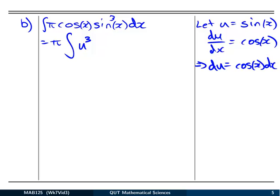That's exactly what we've got in our integrand up here, cos x dx. So I can get rid of that and replace it with u. So I've got an integral of u cubed du, which is just an easy power rule. So we've got π u to the 4 on 4 plus a constant.